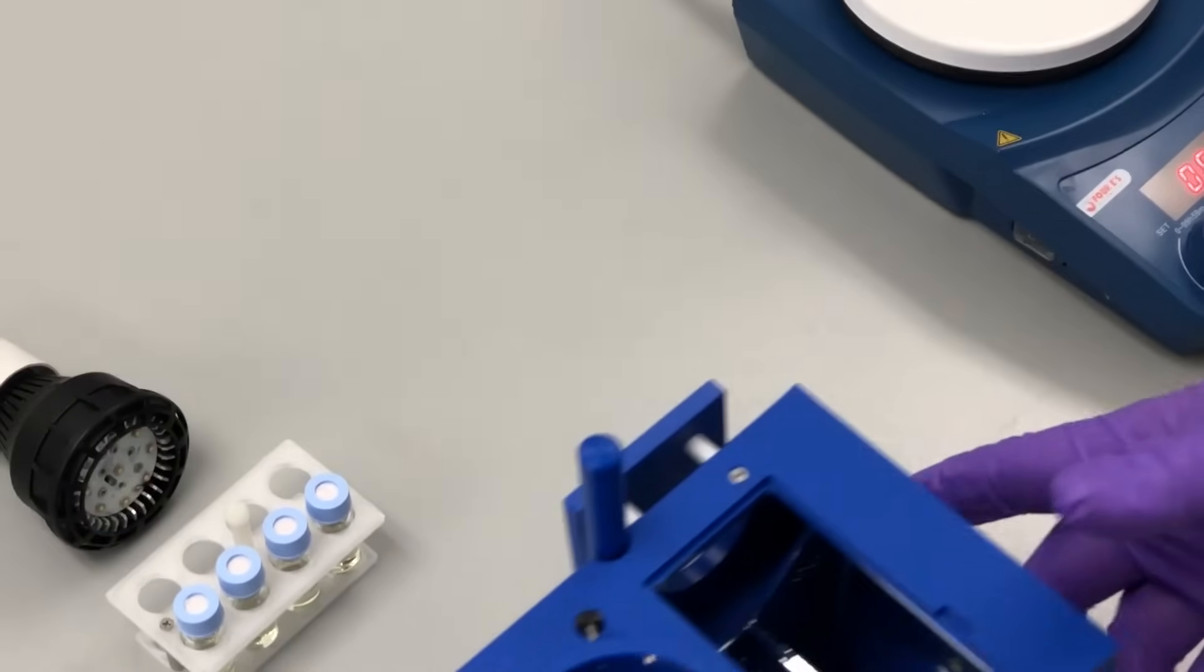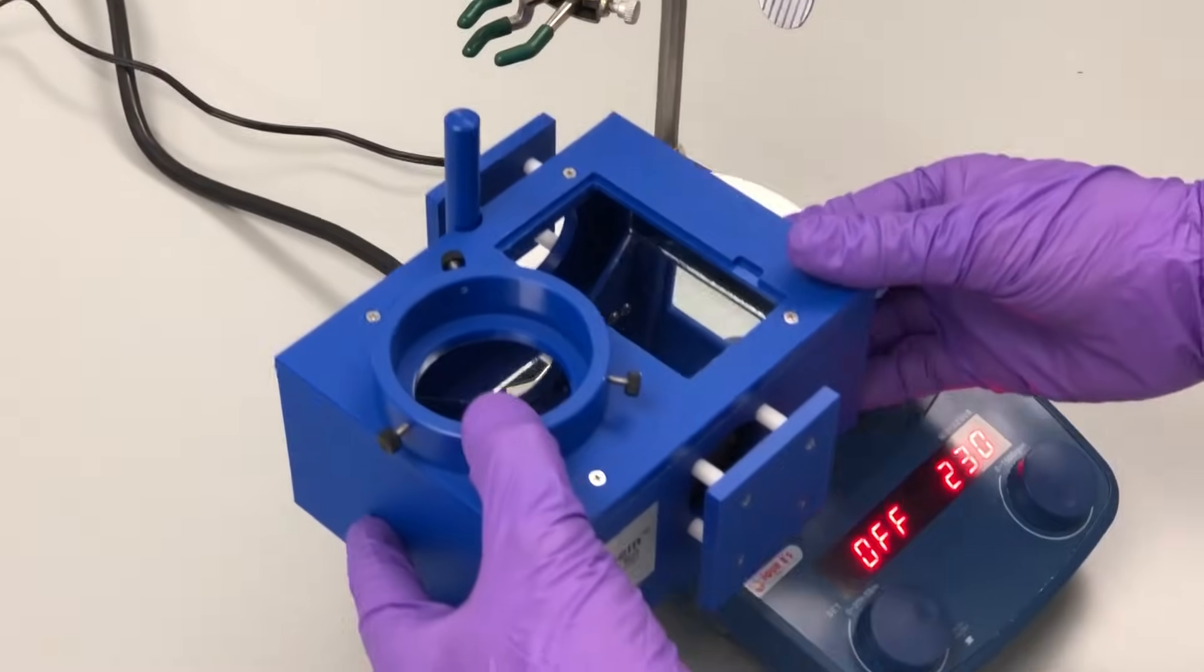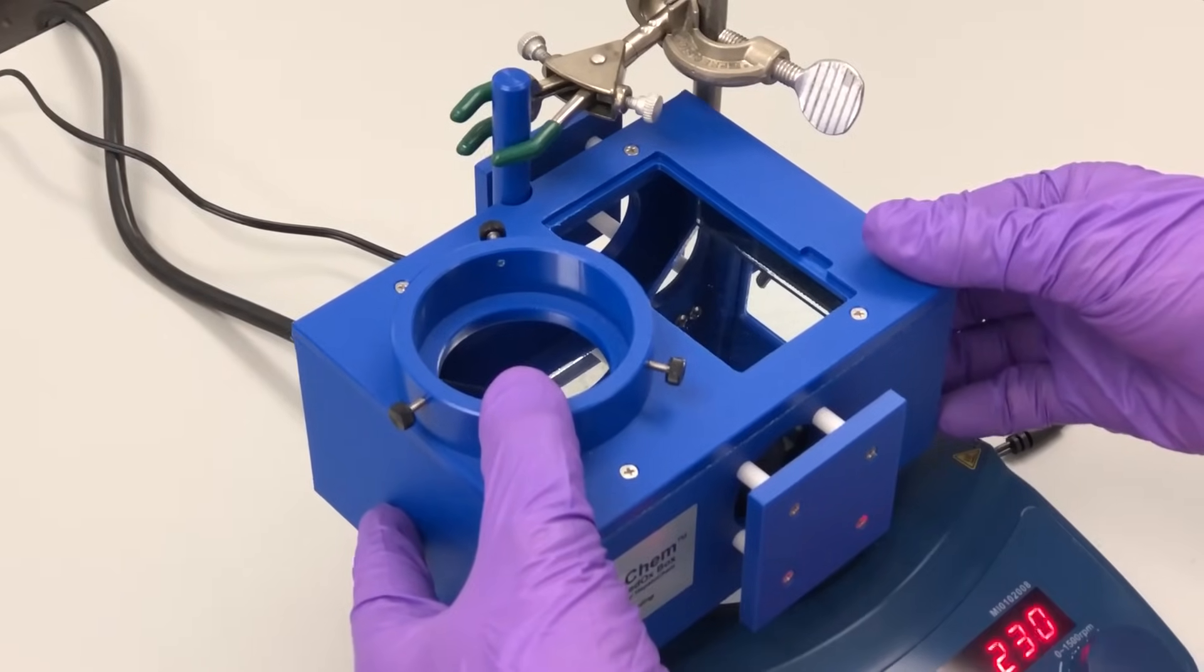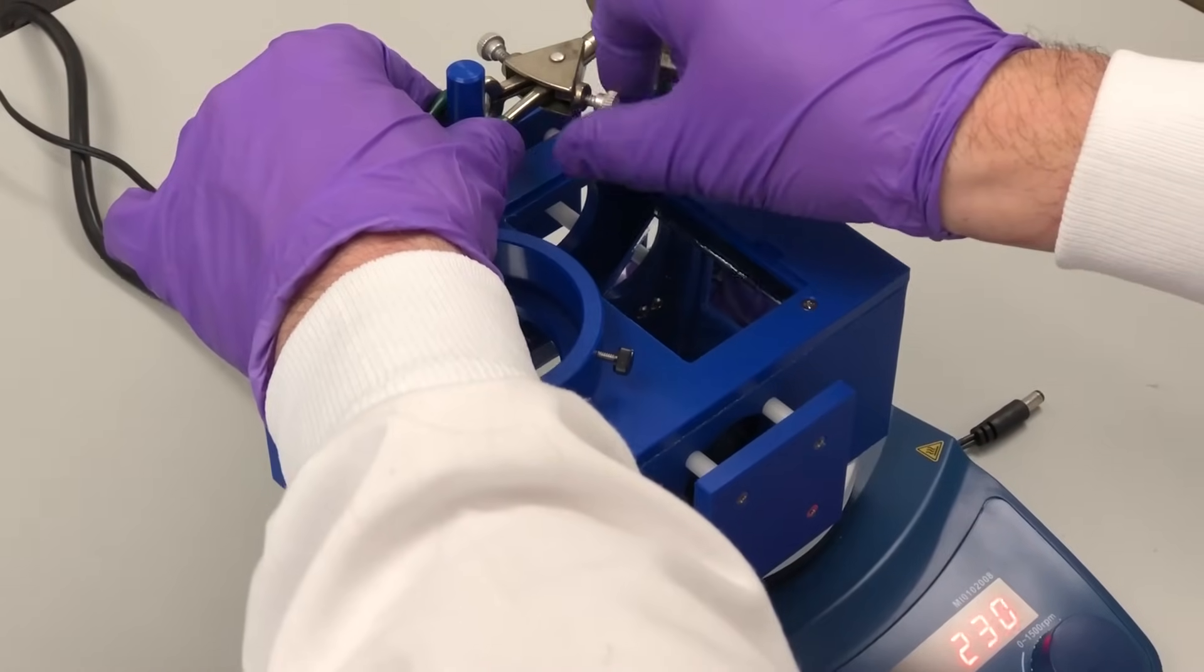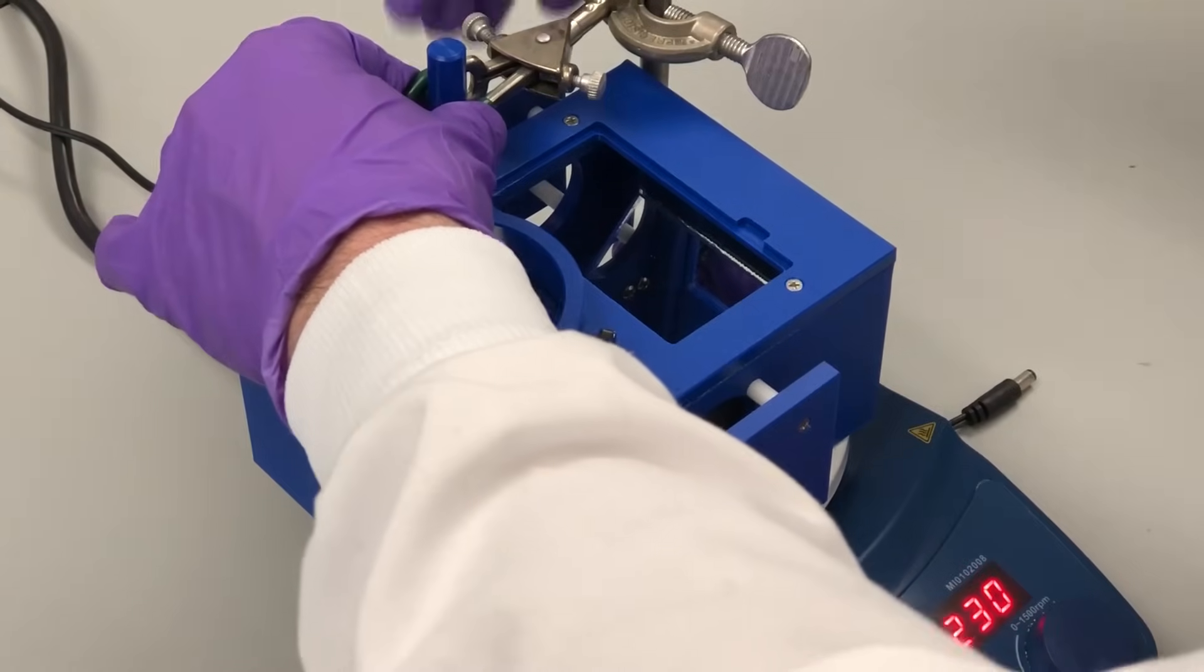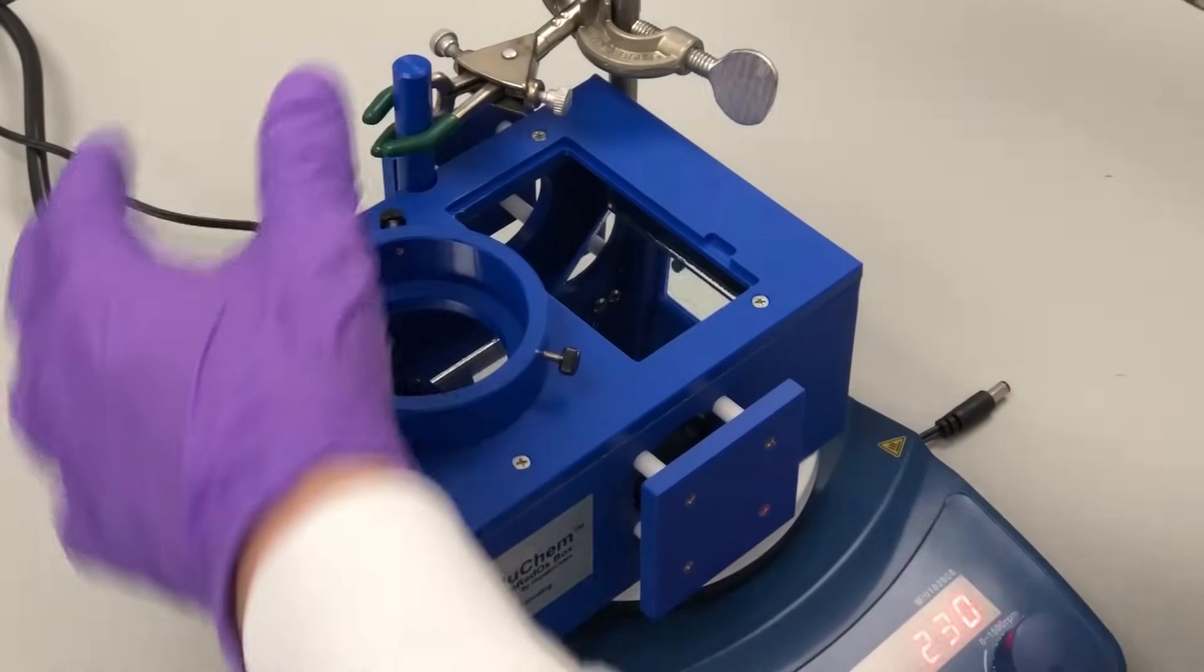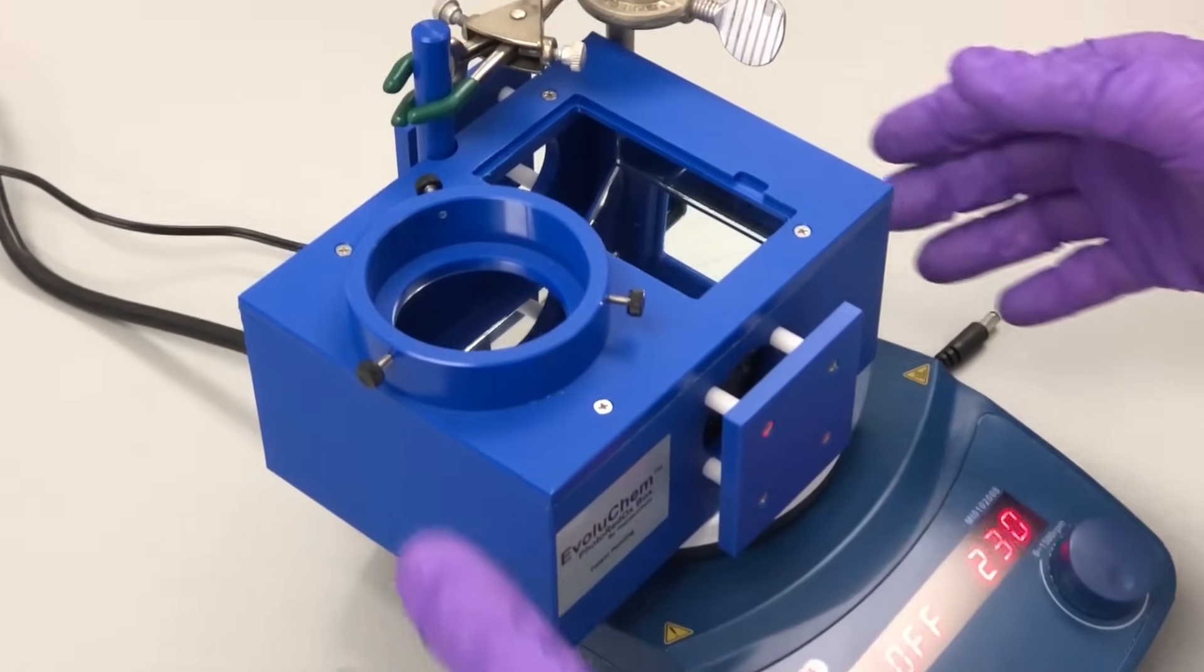EvoluChem photoreactors are designed for quick setup and easy operation. Each model comes with an integrated mounting stand that is compatible with most stirring plates allowing the reaction vials to be engaged by the stirring plate while securing the photoreactor.